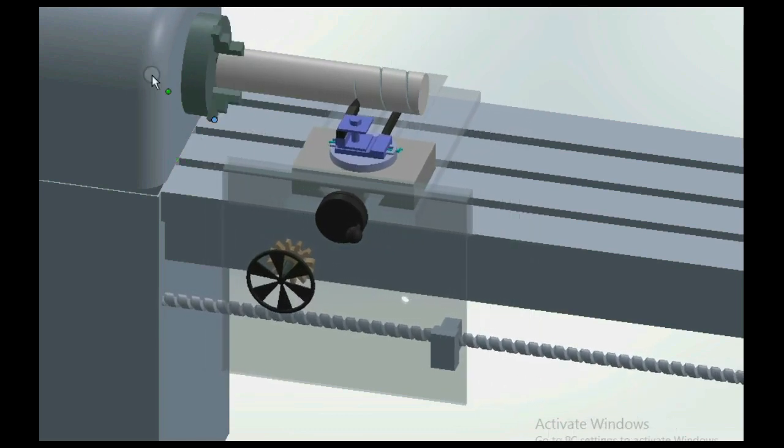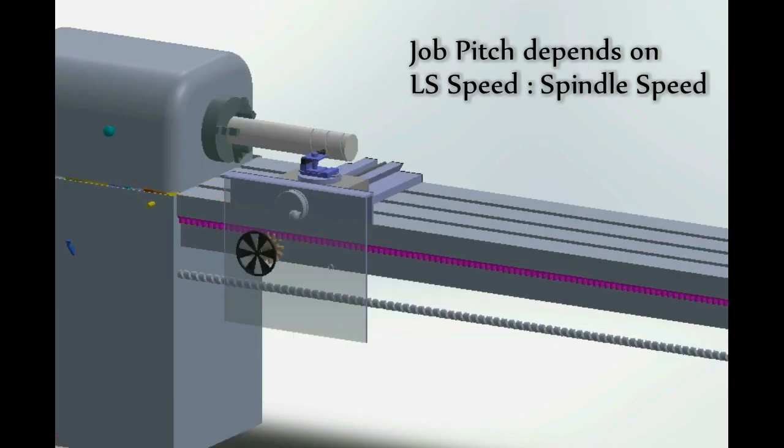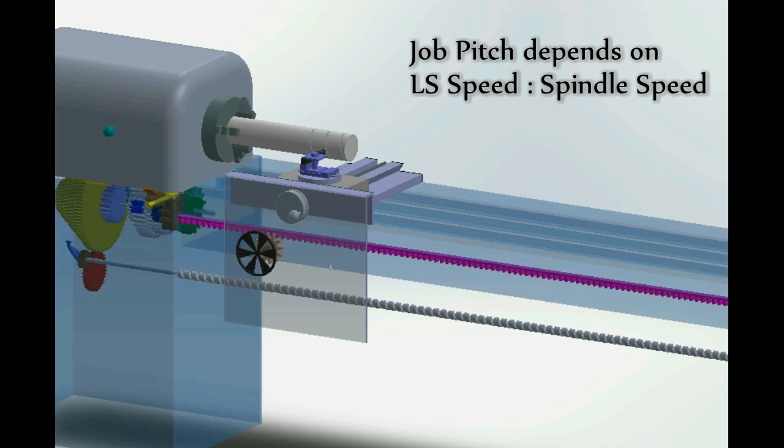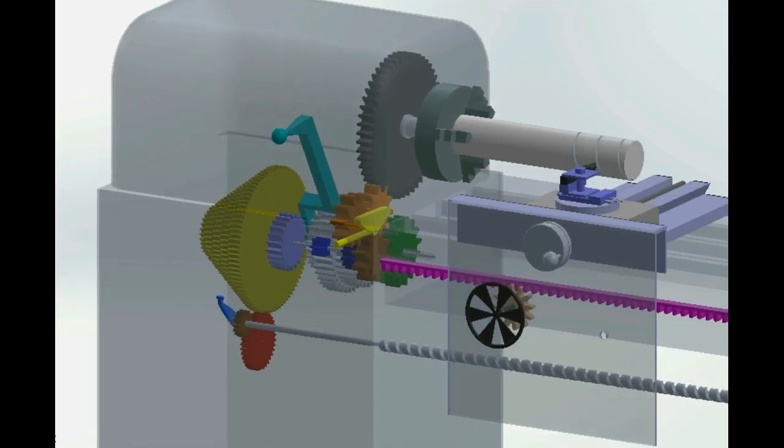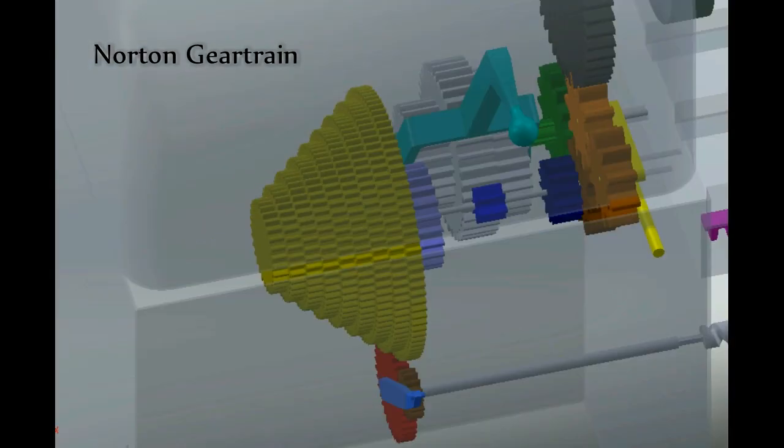So the pitch of the thread being cut depends on the ratio of the speeds of the lead screw and the spindle. And for different pitch to be cut, this ratio can be varied using various speed changing mechanisms including Norton gear train.